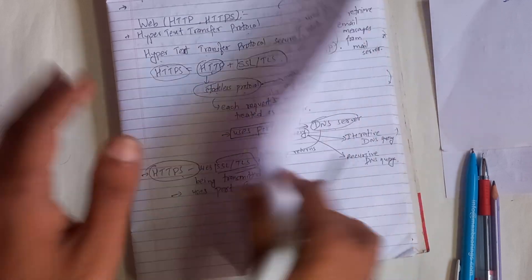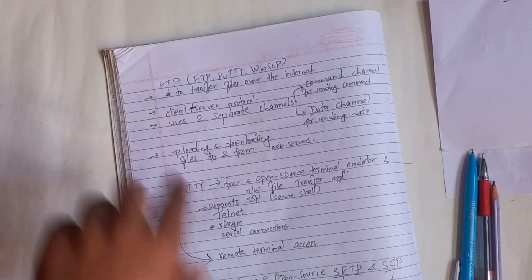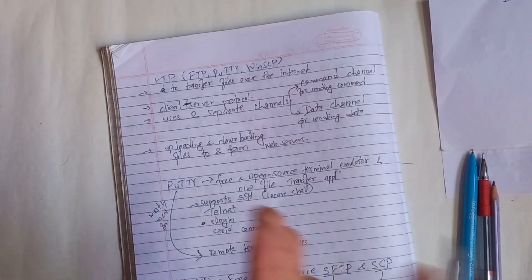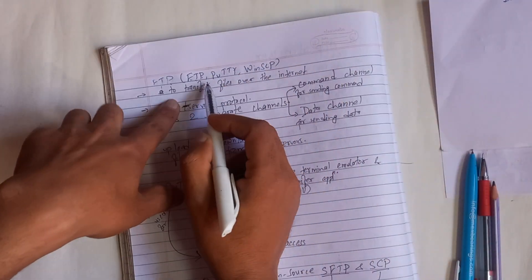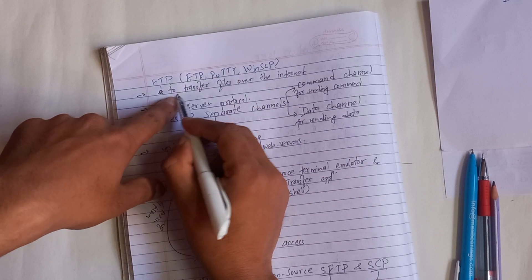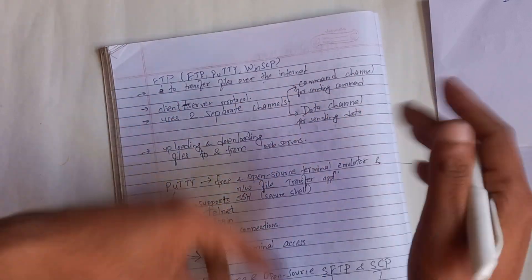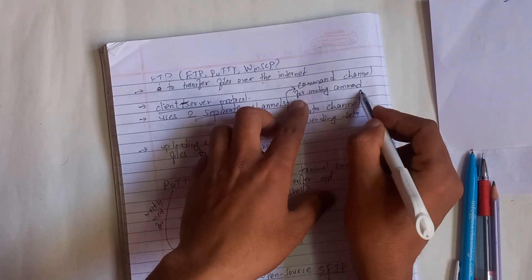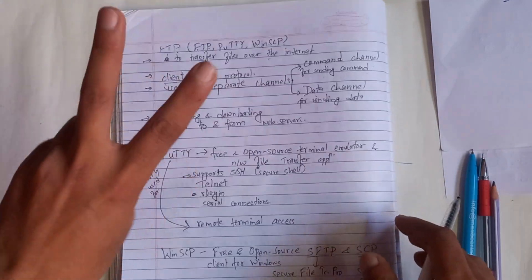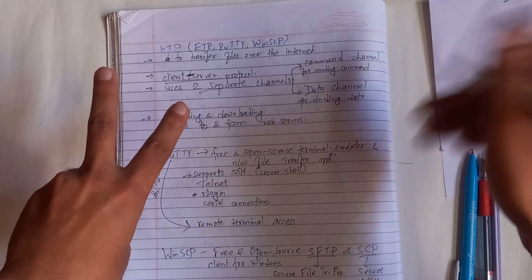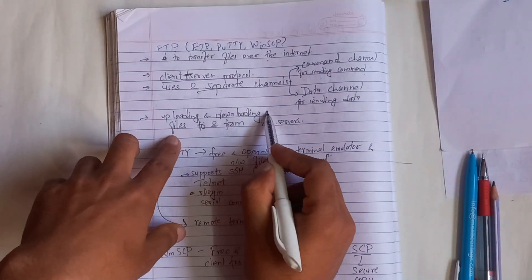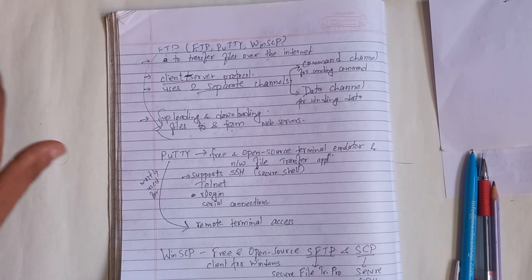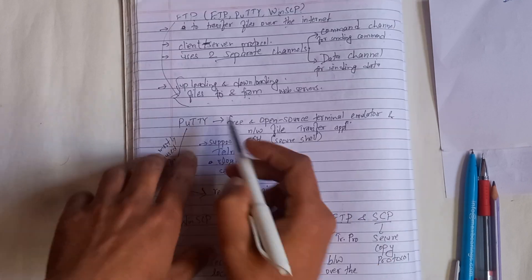You can use HTTP — there are three ports. Now, FTP: File Transfer Protocol is used to transfer files over the internet. It is a client-server protocol using two separate channels — a command channel for sending commands and a data channel for sending data — for uploading and downloading files to and from a web server.